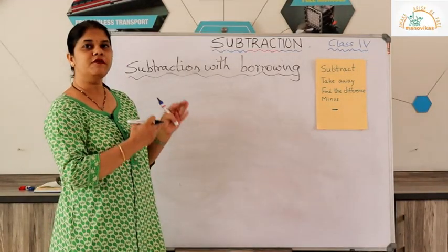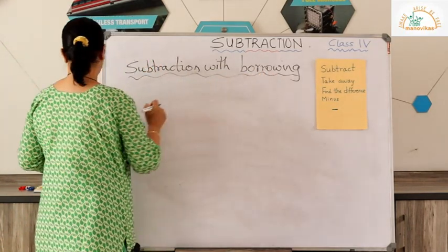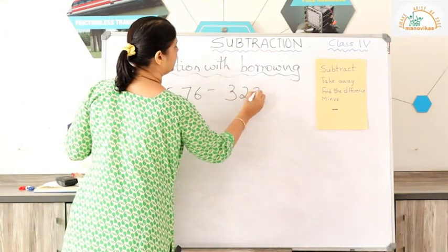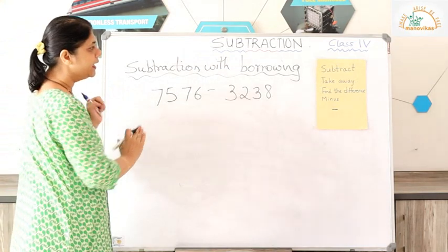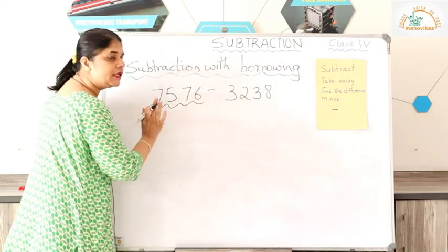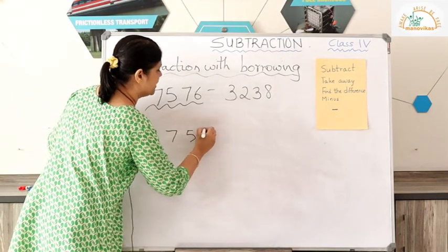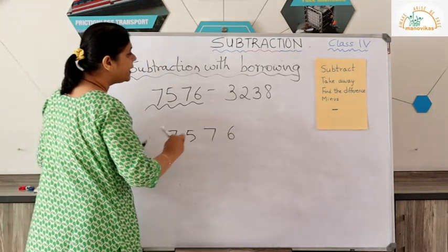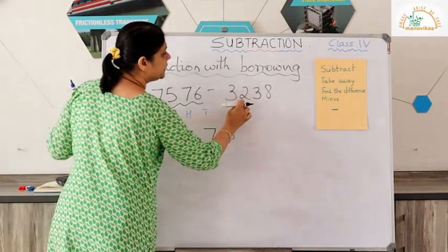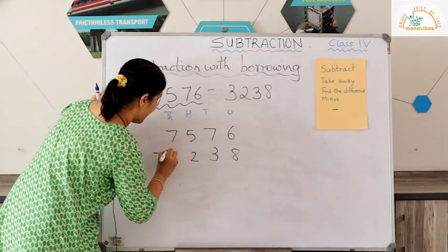The examples you have seen were subtraction without borrowing. Now we will see examples with borrowing. In this case, we need to subtract 3238 from 7576. Write 7576 first — the greater number — with place values: ones, tens, hundreds, thousands. Then write 3238 below it with a minus sign.